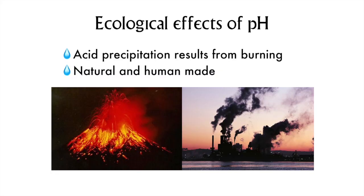Our last topic for this chapter continues in the theme of pH, only at the ecosystem scale. Natural and human-caused burning decreases the pH of clouds, which leads to acidic precipitation. The effects of acid precipitation are varied.